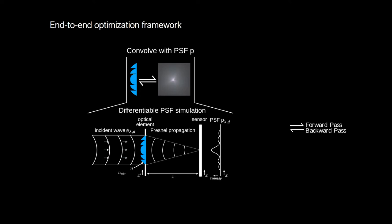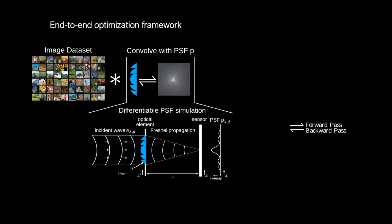The first step is a fully differentiable PSF simulation module, accounting for diffractive propagation to the sensor, wavelength, and source depth. Next, the simulated PSF is convolved with a batch of images from a large RGB image dataset and corrupted with sensor read noise.